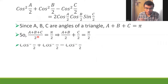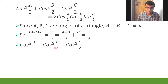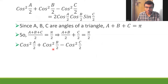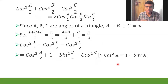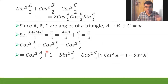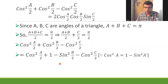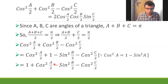Now let's take the LHS. The standard approach is to convert cos²(b/2) using the identity cos²θ = 1 - sin²θ. So cos²(b/2) becomes 1 - sin²(b/2). Pushing the 1 to the front, I'm left with cos²(a/2) - sin²(b/2), with the rest remaining.